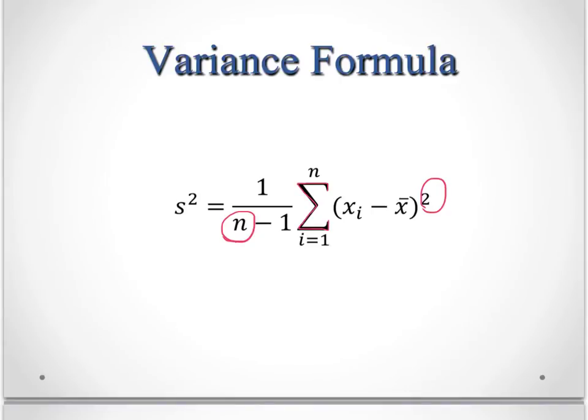And then you take what you get when you subtract it and you square it. So you'll end up with a number for each of the observations. So if you have 10 observations, you would do this 10 times. Take each observation, subtract the mean, square it. Add that to the next observation, subtract the mean, square it.